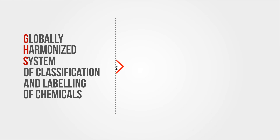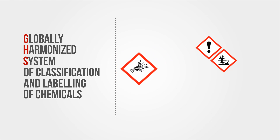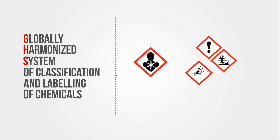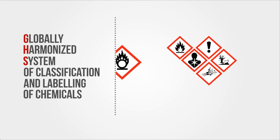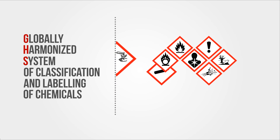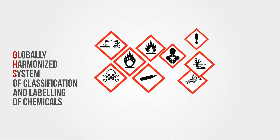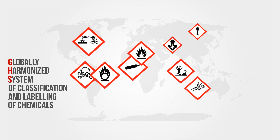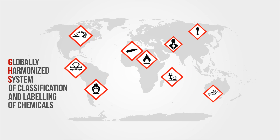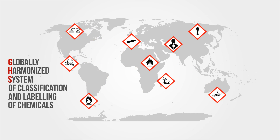The Globally Harmonized System of Classification and Labeling of Chemicals is an international system which harmonizes the classification and labeling of hazardous chemicals, helping to communicate hazards to those along the supply chain.